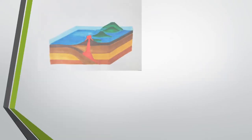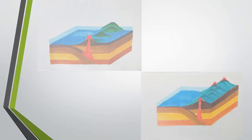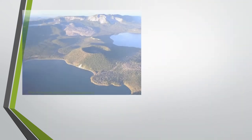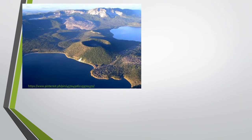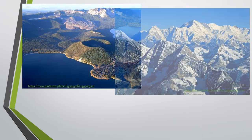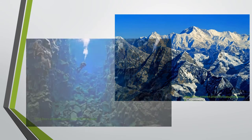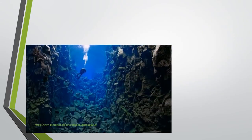In the previous video you have learned about all the processes that happen along the different types of plate boundaries. These processes result in the formation of volcanic arcs, mountain belts, ocean ridges, and valleys.